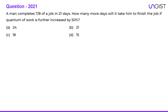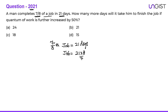This question came in 2021. A man completes 7/8th of a job in 21 days. So the man finishes the total job in 21 × 8 ÷ 7 = 24 days. The question then asks: how many more days will it take if the quantum of work is further increased by 50%?